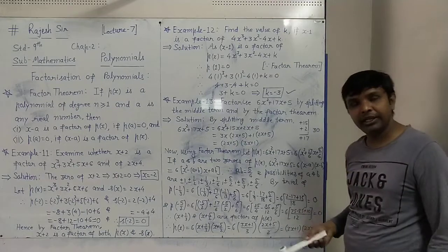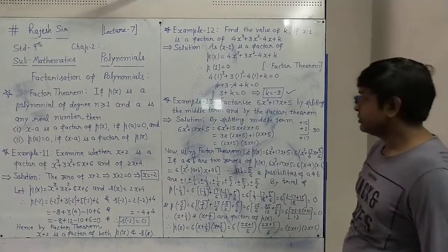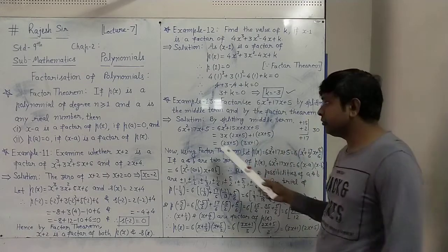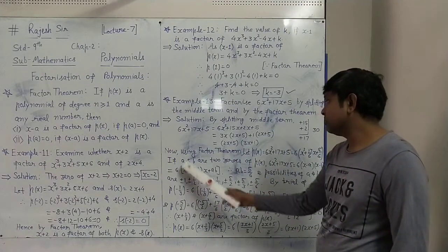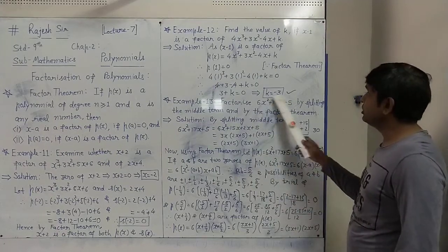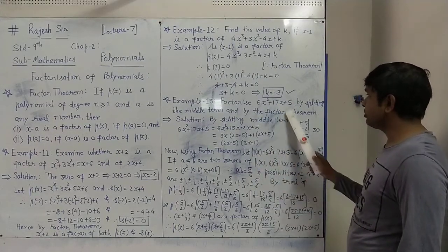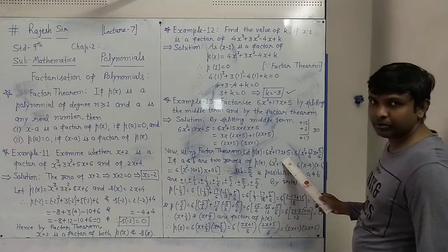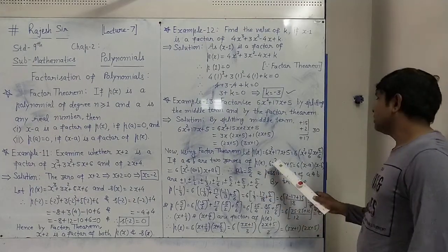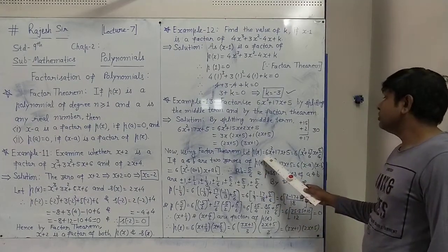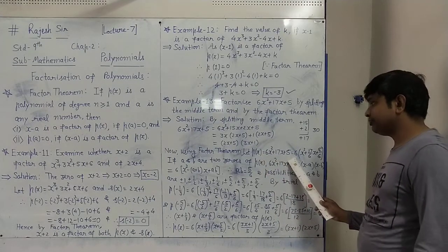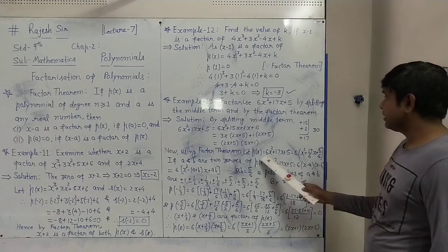That we have done in earlier classes also. Now the new part: using the Factor Theorem, we want to factorize this. Let the given polynomial be P(x) equals 6x squared plus 17x plus 5. We will take 6 as common.